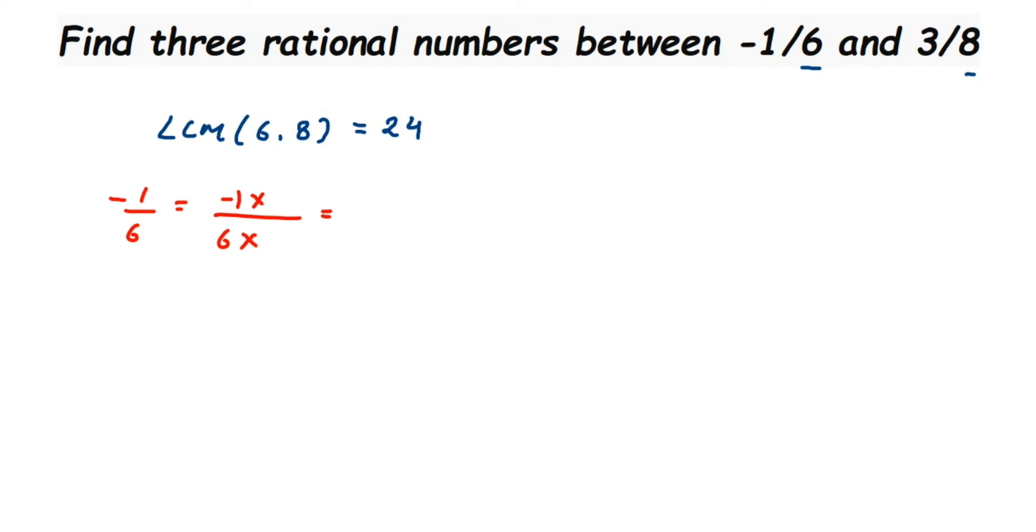So we know 6 times 4 is 24, right? So I'm gonna multiply 4 in the denominator and in the numerator. So this will become minus 4 by 24.